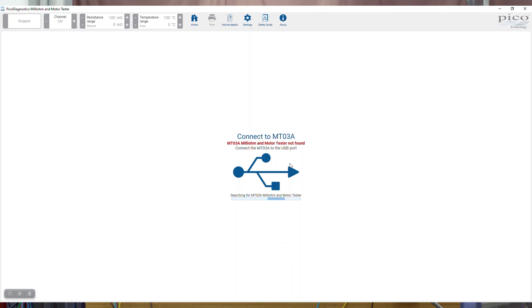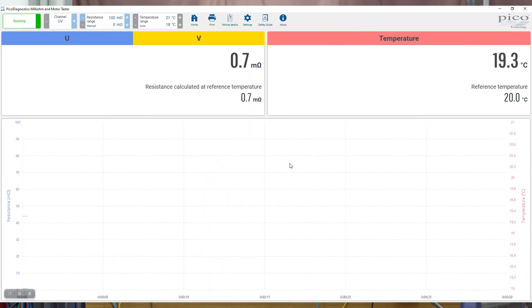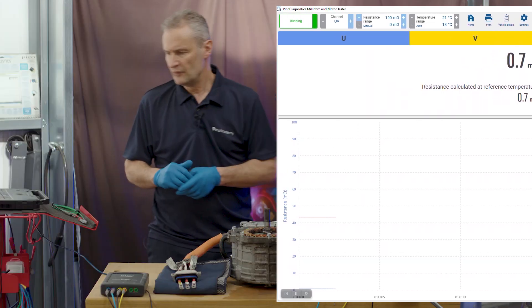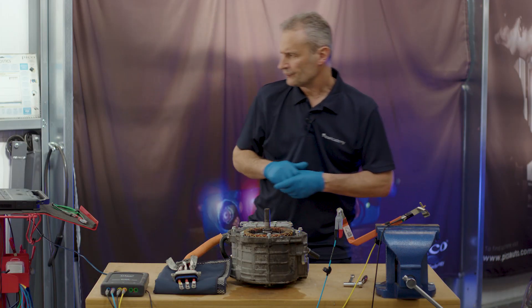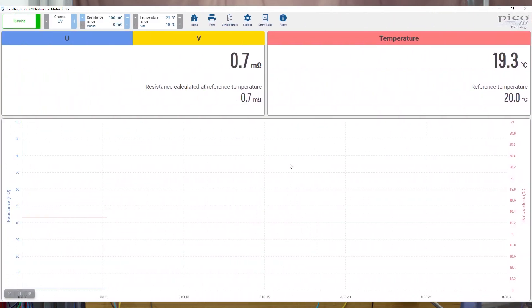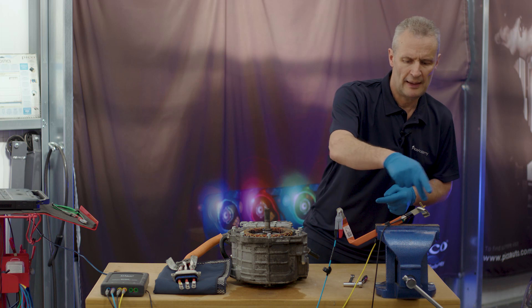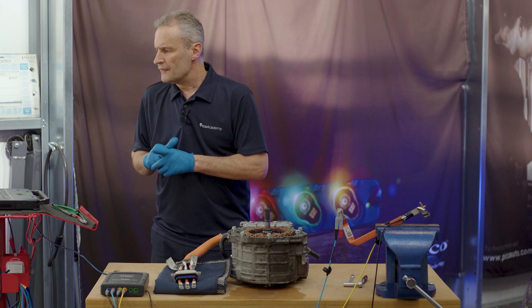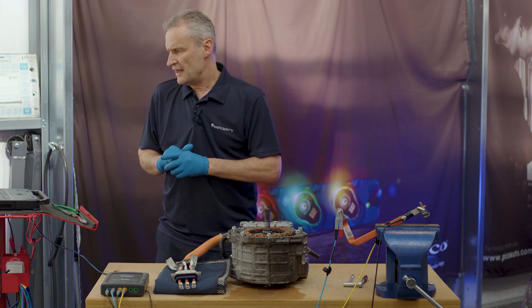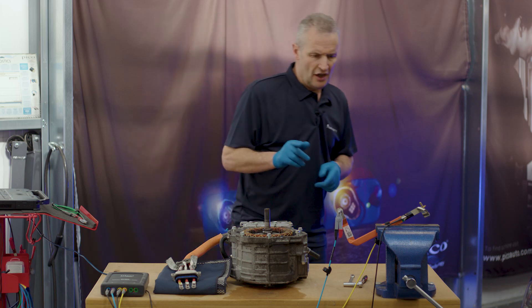You'll hear the chime there, we're actually connecting. Confirmation of connection, and there we have the screen. Already you can see we're logging resistance. Again, we're measuring between U and V. Notice the temperature. I've moved the temperature probe from the motor now and I've attached it to the bus bar because we're able to compensate for temperature. The blue line of course is resistance, red line is temperature in the graph.